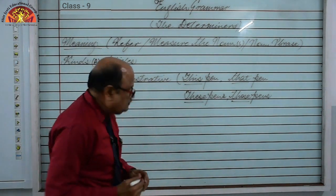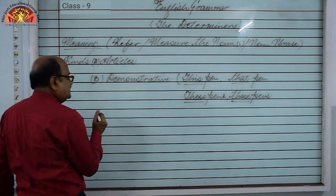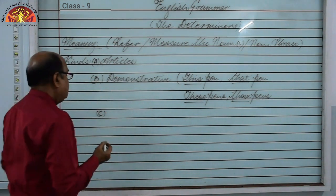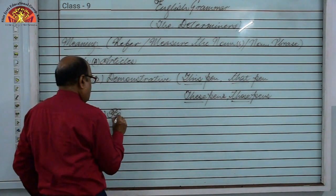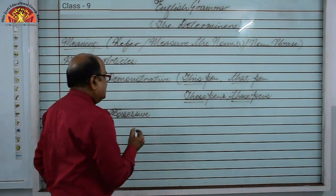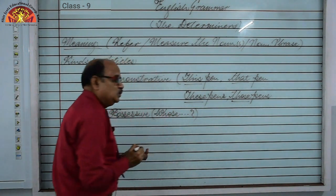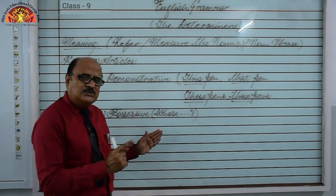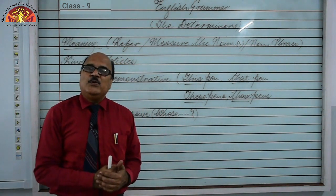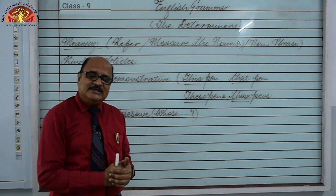Next you can see: articles, demonstrative, then possessive. Possessive means 'whose.' All the words used as an answer to the question beginning with 'whose' are known as possessive determiners — also called possessive adjectives.